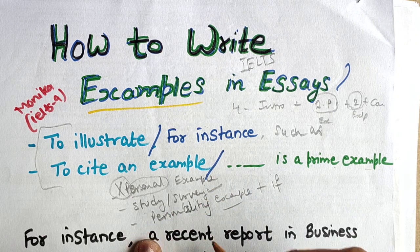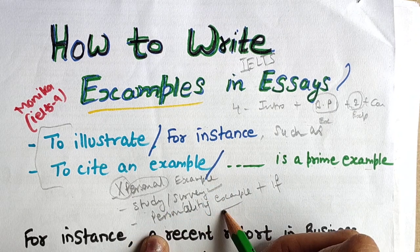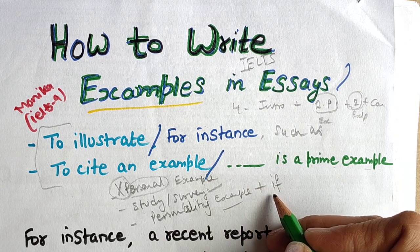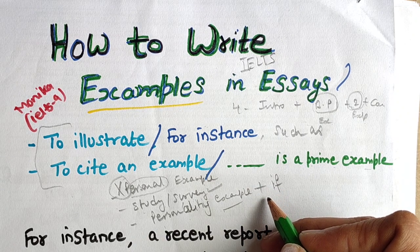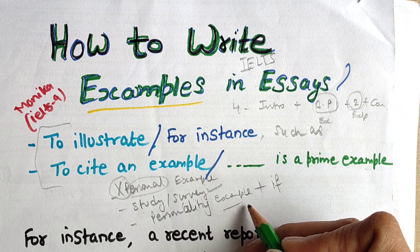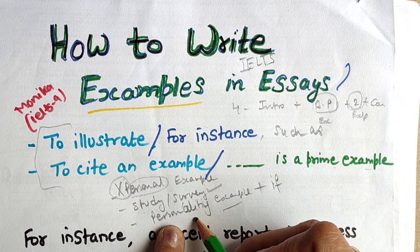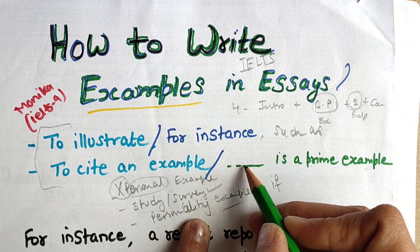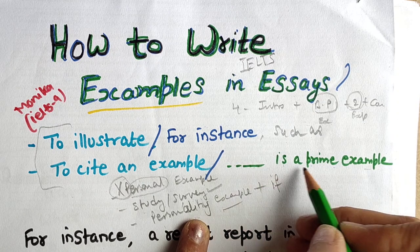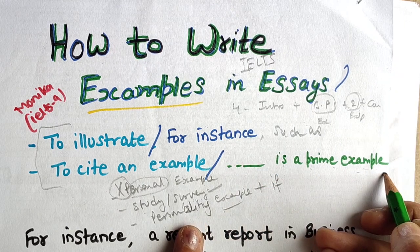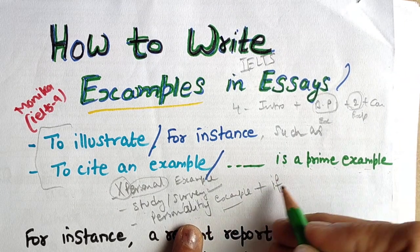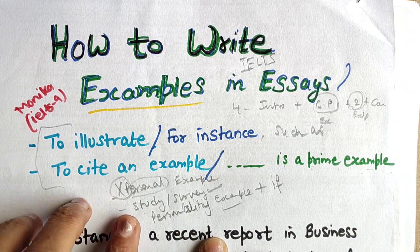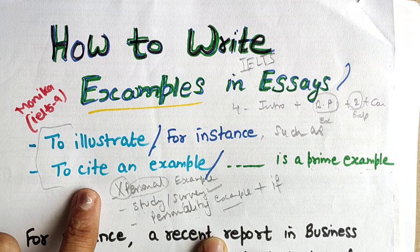For personality or celebrity examples, if you want to show that a person worked very hard or achieved something, you can always give their example. You can say: '[Name] is a prime example in this context.' Now let me show you how to write different types of examples in an essay.